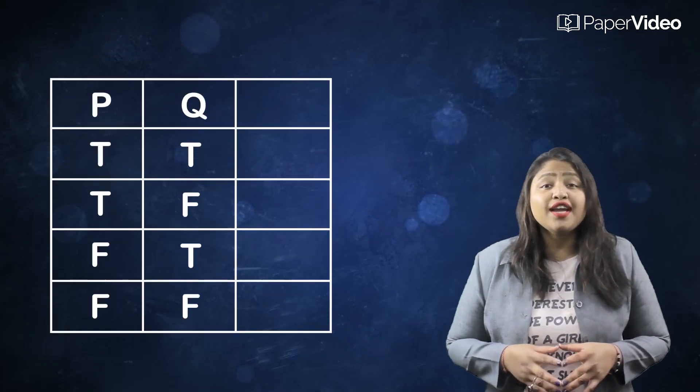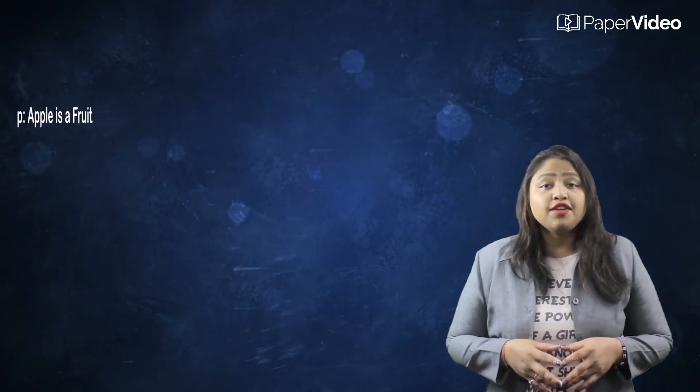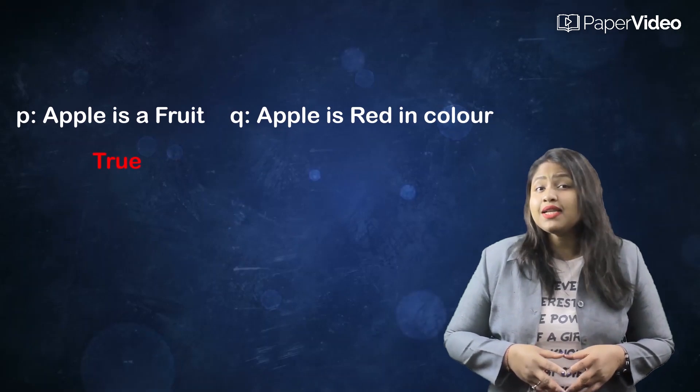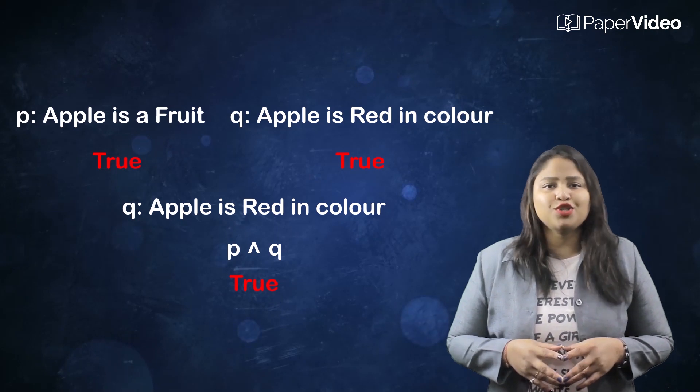To construct the truth table for conjunction, we write false if any one of the column contains false. This means that if Apple is a fruit and Apple is red in color are both true statements, then their conjunction will also be true.